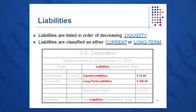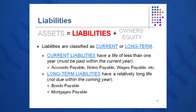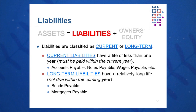Current assets are listed first, longer-term assets second, and total assets are the summation of the two. On the right side, items are also listed in order of decreasing liquidity: current liabilities are listed first, then longer-term liabilities like long-term debt, mortgages payable, and bonds payable, all in order of decreasing liquidity.